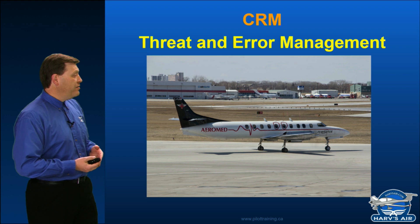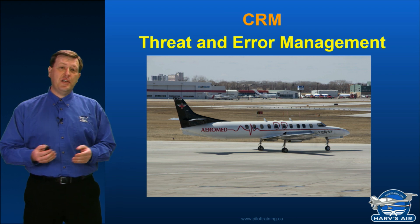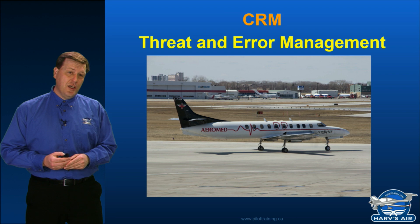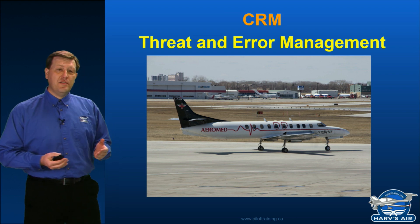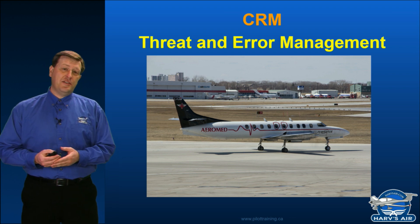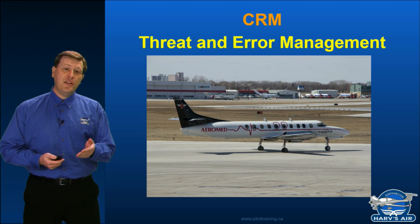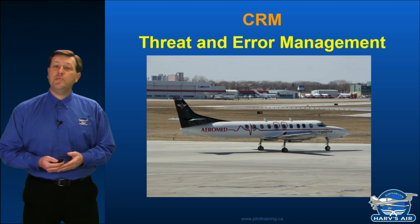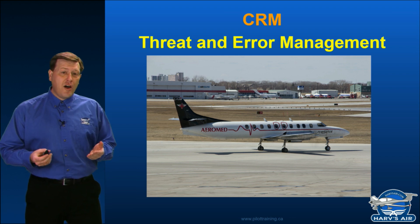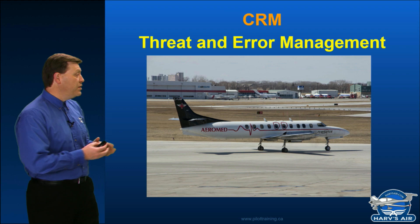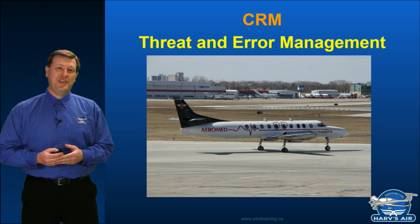We also have errors. As humans, we're going to make mistakes. Threat and error management is a system that recognizes that we're going to have threats always when we fly, and yes, there are going to be times when we make errors. However, there are ways that we can reduce both of these.